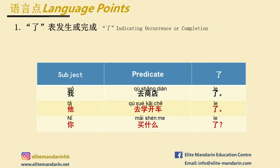Let's learn some language points. 了 indicates the past or the completion. 了 can be used at the end of a sentence. For example: 我去商店了 — I went to the shop. 他去学开车了 — he went to a driving lesson. 你买什么了？ — What did you buy?